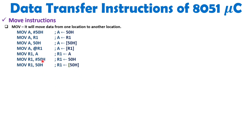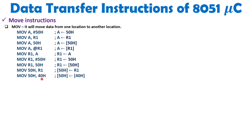When you execute MOV 50H, R1, the content of R1 is copied to memory location 50H in internal RAM. When you execute MOV 50H, 40H, both are internal RAM addresses — the data at address 40H is copied into address 50H. When you execute MOV 50H, @R1, R1 is pointing to an internal RAM address, and whatever data is there gets copied into address 50H in internal RAM.